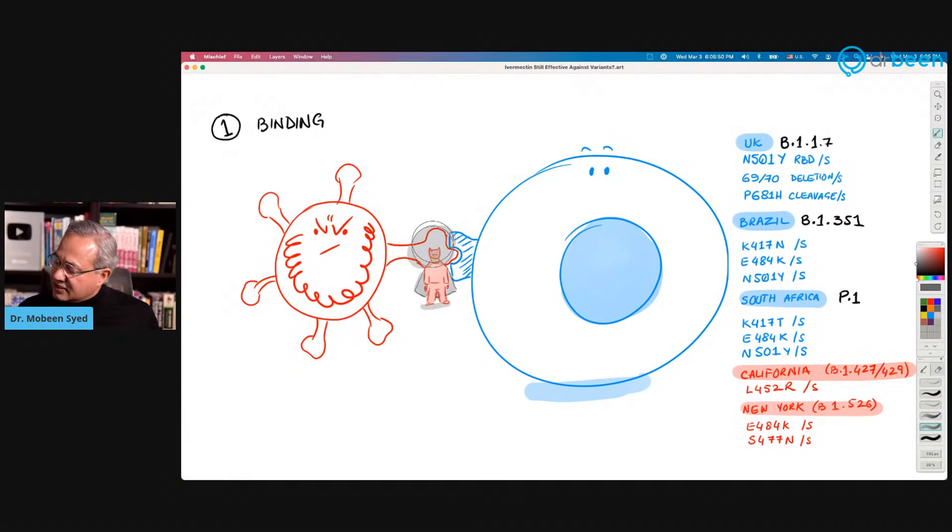We know that one function of ivermectin is to actually bind with the spike protein and then also hinder the engagement or docking of the spike protein with the ACE2 enzyme. If spike protein has significantly changed which causes the ivermectin not to be docked with it, then the virus could escape. So far that has not happened for any of the variants.